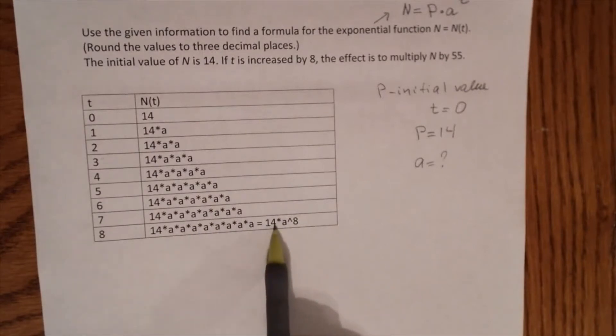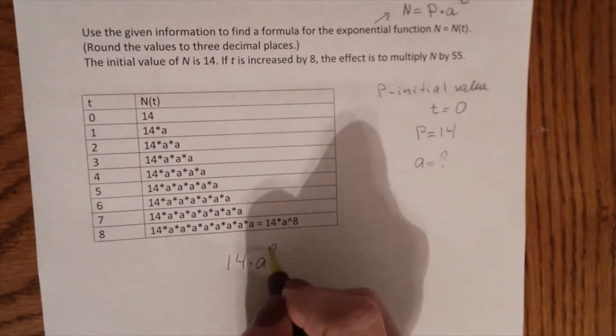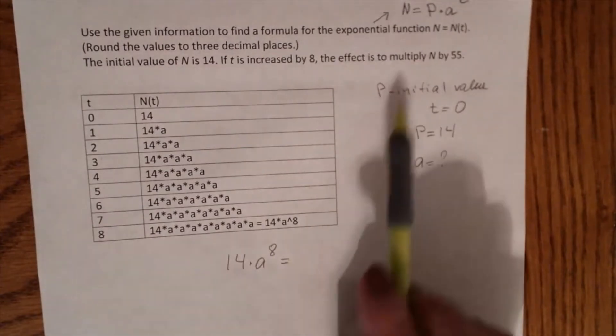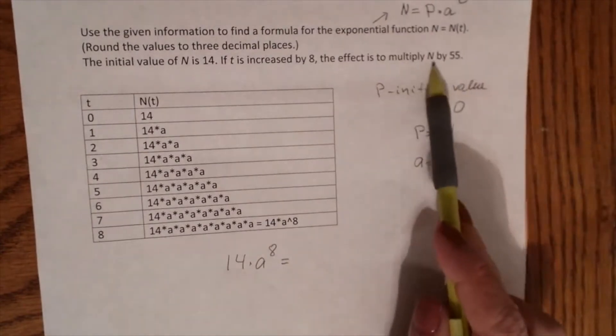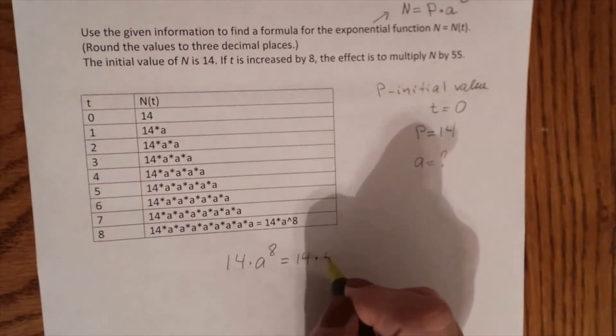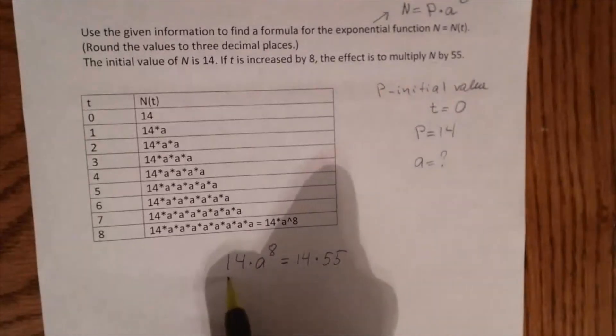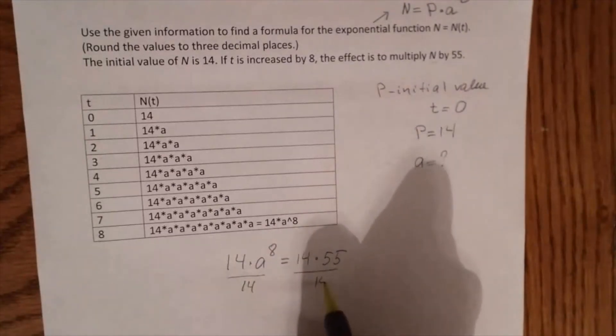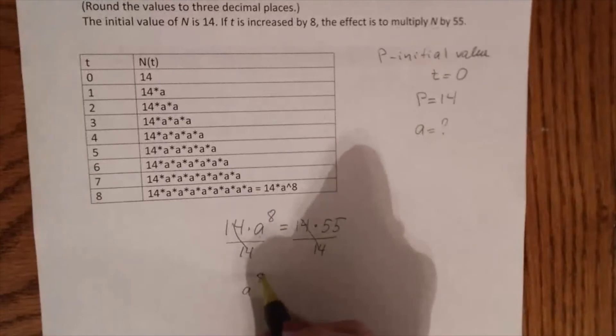Or we can write it down as 14 times a to the 8th power. On the other hand, it is equal to N multiplied by 55, and your original N was 14. So it will be 14 times 55. We have an equation, and we need to find a. The easiest way is to divide both sides by 14. And we have a to the 8th power equals 55.